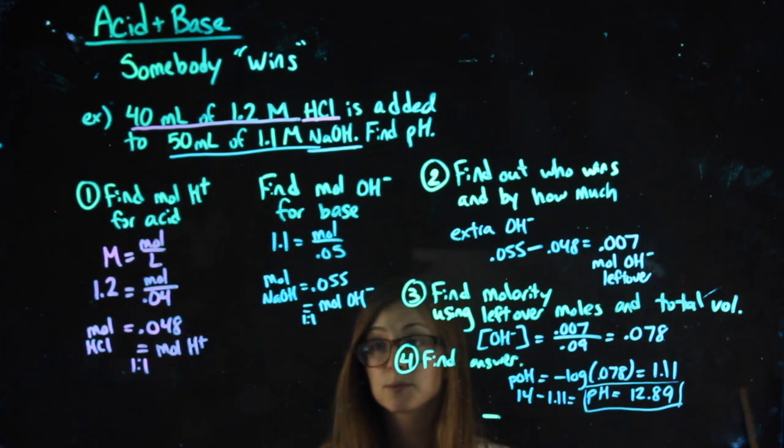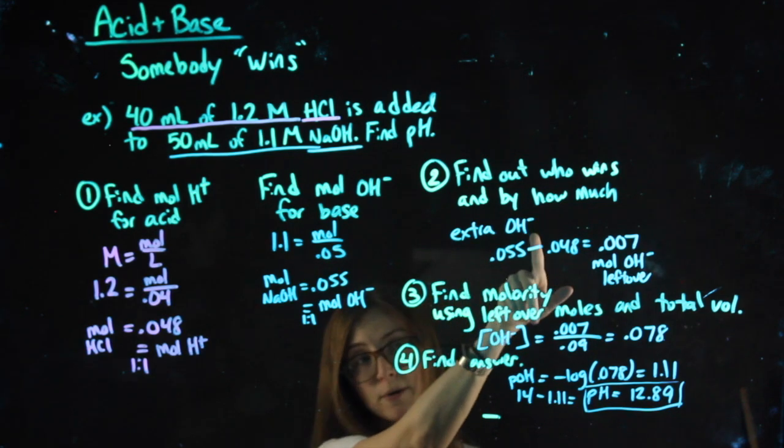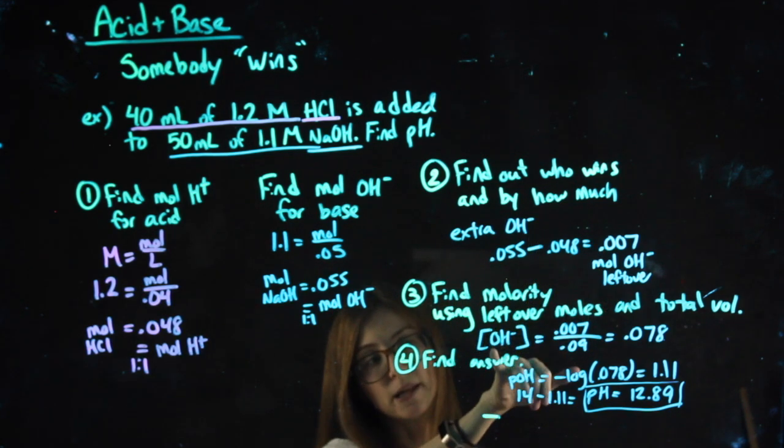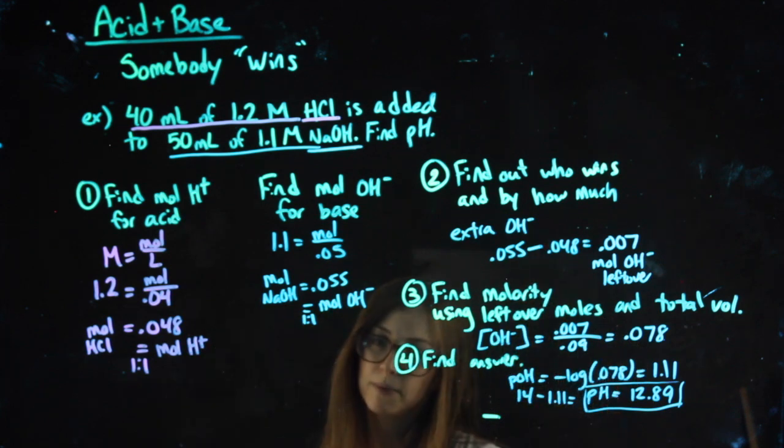If you were doing this problem and you had more H+ than OH-, what you'd have extra would be the H+. So your molarity would already be the H+, and when you negative log it, that would already be pH and you'd be done.